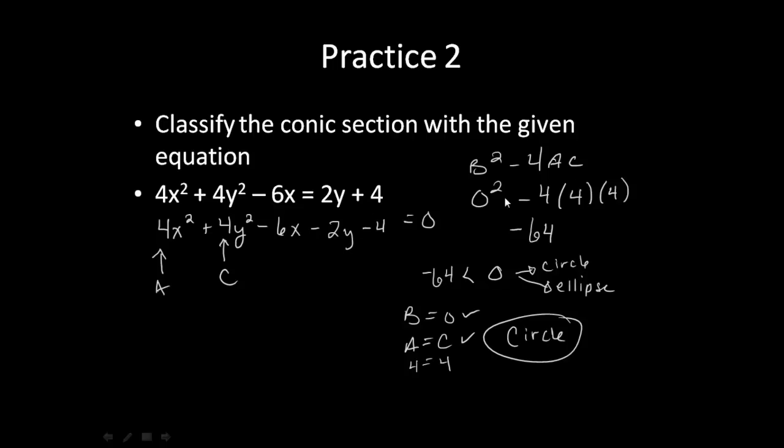Then, I did my b squared minus 4ac. So, b comes from your xy term, which happened to be zero again. The a comes from your x squared term, so that was 4. The c comes from your y squared term, that was also 4. So, I ended up getting zero minus 4 times 4 times 4, gave me a negative 64.